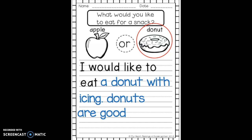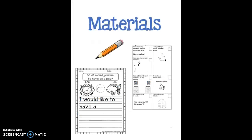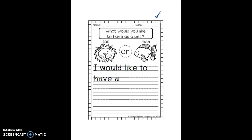Now boys and girls, it's time for you to do some writing. You're not going to be writing about an apple or donut — you are going to write about a lion or fish. What would you like to have as a pet? Get a pencil, this paper, and your Fix-It-Up checklist, and get started. You might not finish all your writing today since we had this mini lesson, but that's okay — your teacher may give you more time tomorrow. I cannot wait to see what you choose and what your opinion is about what you would like to have as a pet.